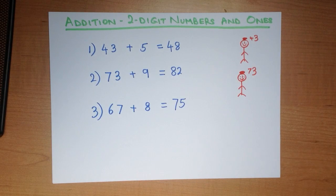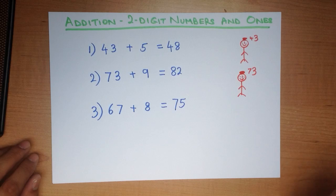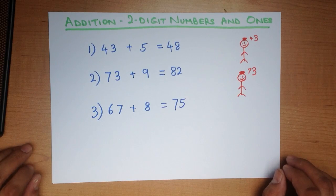And that is addition of two digit numbers and ones using the head and fingers method, which is ideal for mental arithmetic.